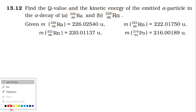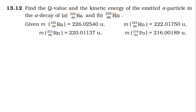The Q value can be found from the mass defect into c-squared. On the atomic mass unit level, that is atomic mass units into c-squared equals 931.5 million electron volts. Using this relation, check the Q value and find the mass defect.